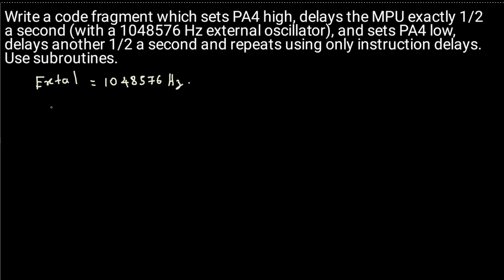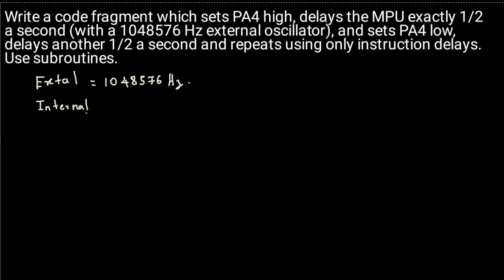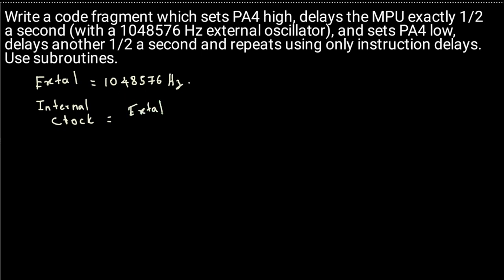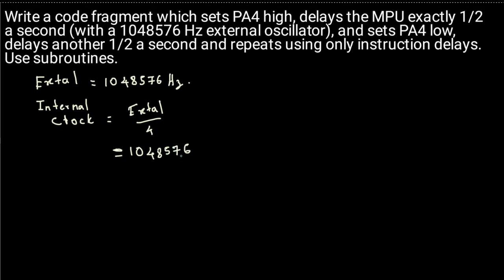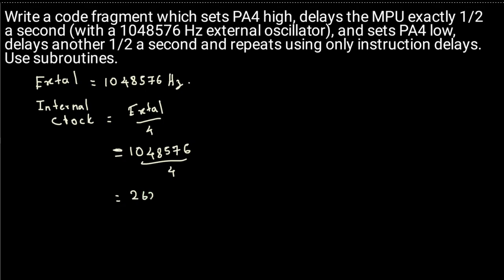What we need to find out is the Hz for the internal clock, that is the E-clock, which is the external clock divided by four. So here we divide 1,048,576 by four, and that gives us 262,144 cycles per second.